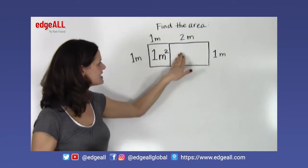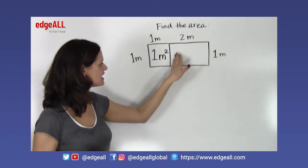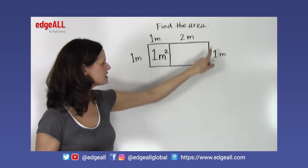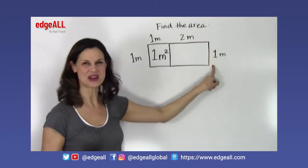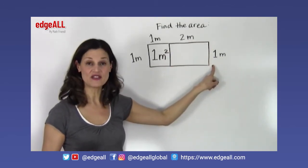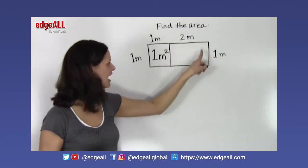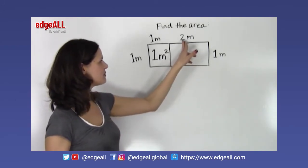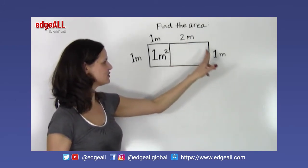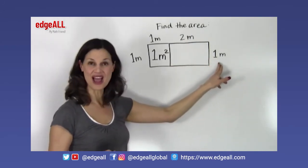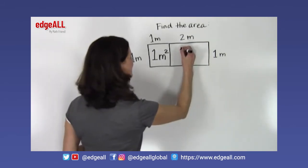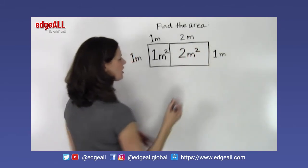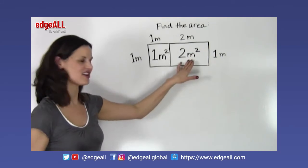This rectangle here is 2 meters by 1 meter. To find its area, we multiply 2 times 1, which equals 2. So the area of this small rectangle is 2 meters squared.